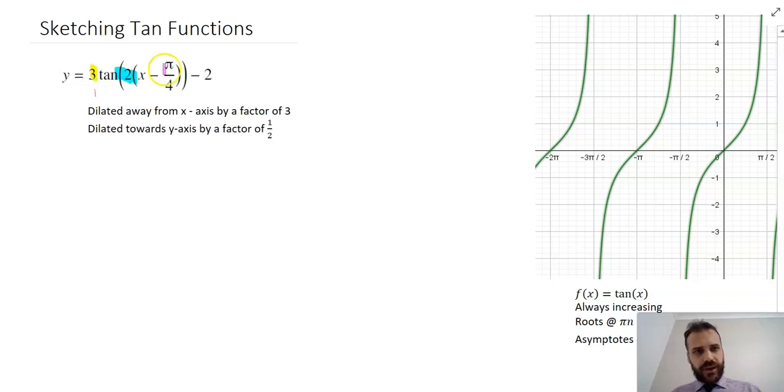And then, of course, we have this bit here, which is going to shift our function down by 2. And then, finally, it's going to translate left by π/4. So that moves the opposite of how you would expect it to.